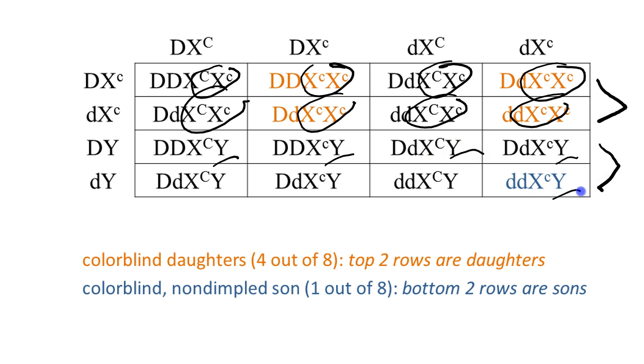When the question asks you, when they have a daughter or when they have a son, what is the chance that, whatever the question is, you will look at the appropriate rows so that you will not be counting all 16. But if we ask the question, what is the chance when they have a child, we would look at all 16 boxes.